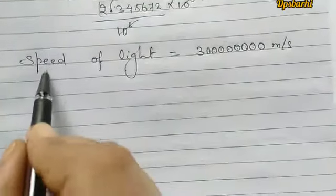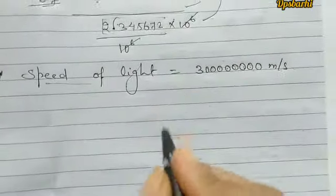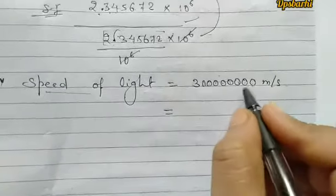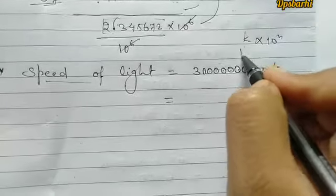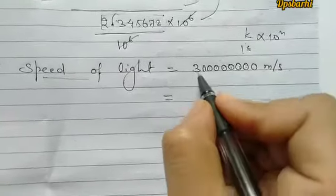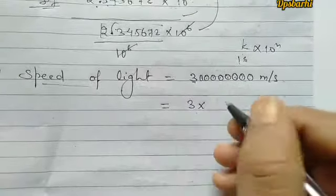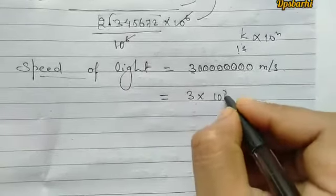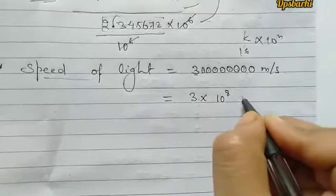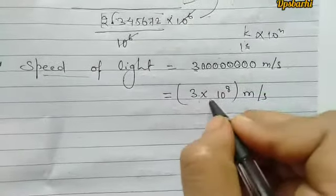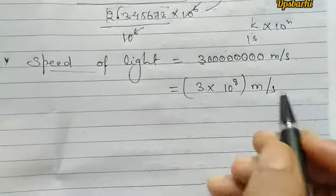If we write the speed of light — 300,000,000 — what happens in standard form? The value of k is 3, and n is 8, so we write 3 × 10 to the power 8.